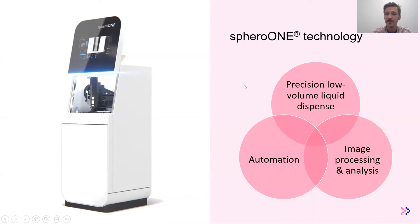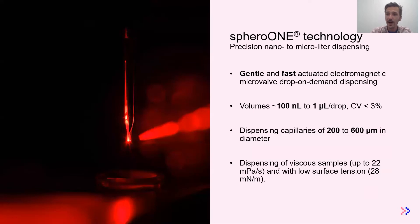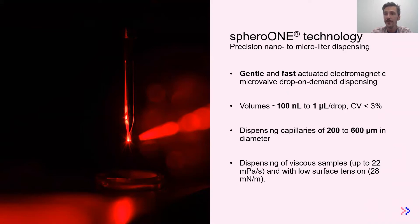The Sphere 1 relies on precision low-volume dispensing, image processing and analysis, and automation in order to isolate and dispense cellular aggregates. The Sphere 1 is equipped with the SideClick Nano technology, which is a gentle and fast Selenium valve drop-on-demand dispensing system. Typically, the drops we generate range from 100 nanoliters up to 1 microliter, with a coefficient of variation below 3%, so highly accurate and reproducible drop generation.